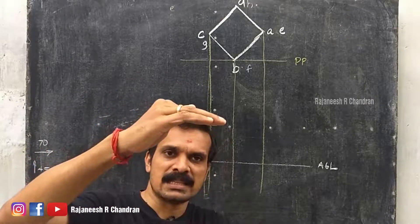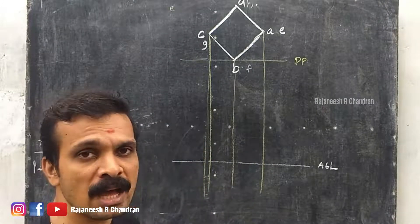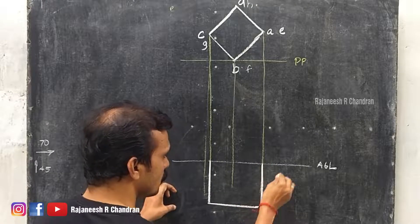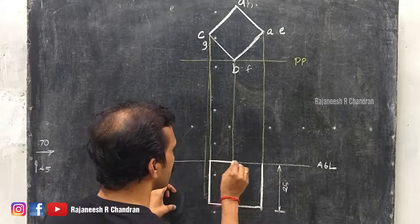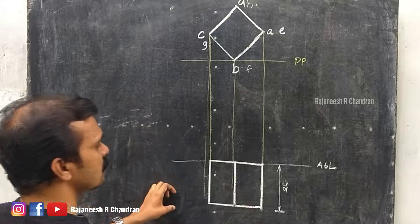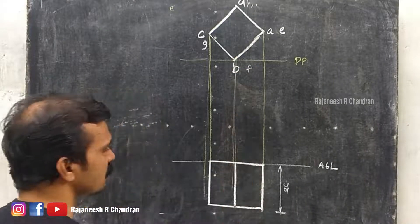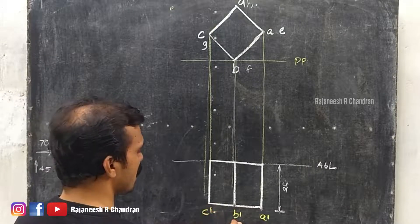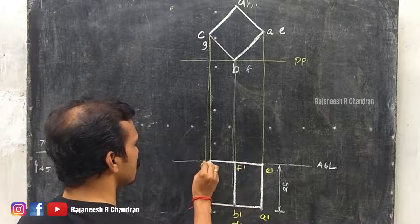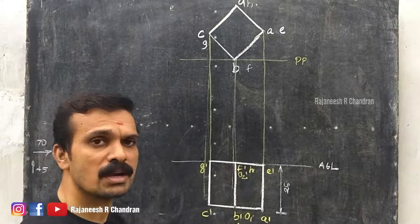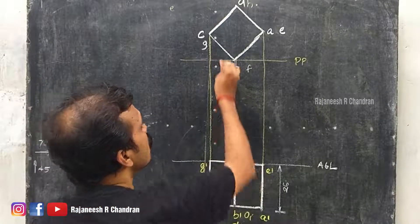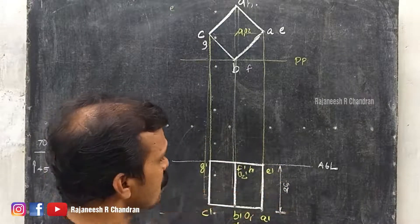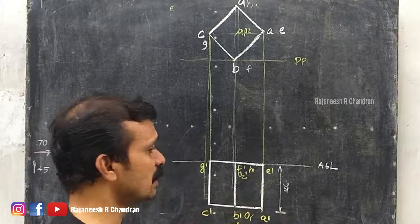The solid is placed on or hung from the auxiliary ground line. From that point, we draw the front view downwards. The cube is 25 mm, so the front view dimensions will be 25 mm. Label the front view points as A dash, B dash, C dash, D dash, E dash, F dash, G dash, H dash, O1 dash and O2 dash. Since the solid is placed on the auxiliary ground line, we draw downwards from there to obtain the front view.